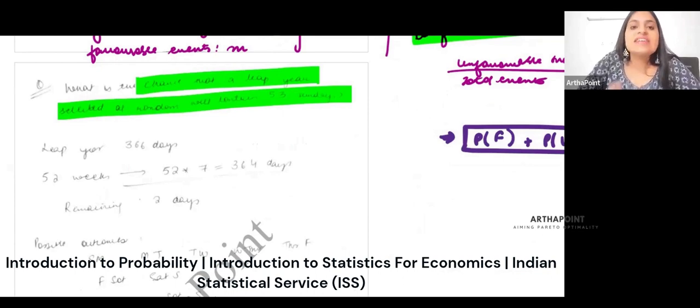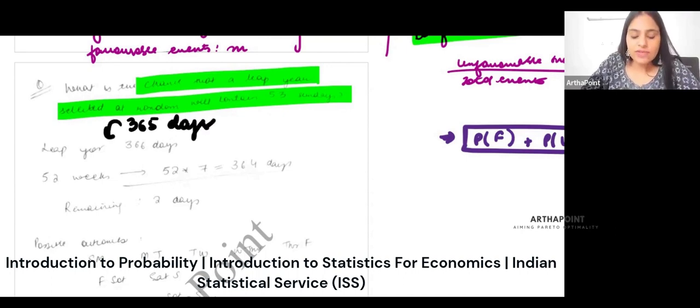So in any usual year you have 365 days. In a leap year you have 366 days. Now we know that in any year there are 52 complete weeks.